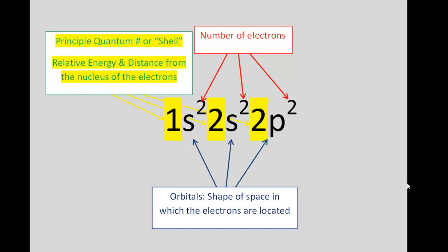The superscripts represent the number of electrons. The letters represent the orbitals, which are the shape of space around the nucleus in which the electrons are located. The large integer numbers in front of the letters are the principal quantum number, sometimes called the shell. Those numbers give you a sense of the relative distance the electrons are from the nucleus and their relative energy — the higher the number, the further the electrons are from the nucleus and the higher their energy.